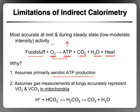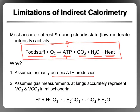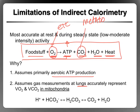Another limitation is that when we use indirect calorimetry, we're assuming all of the oxygen used is being used in the electron transport chain — that assumption is always true since that's the only place we use oxygen. But we're also assuming that the CO2 we're measuring as it comes out of the lungs and into the machine is what we call metabolic CO2 — CO2 produced in the intermediate step and in Krebs.